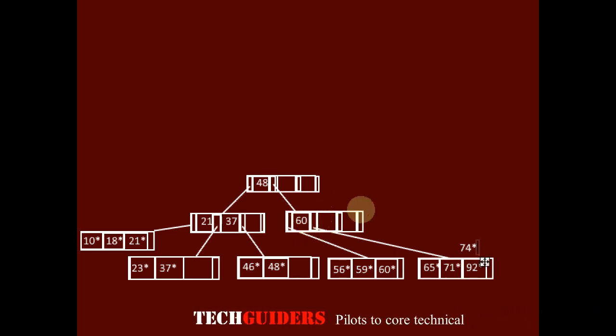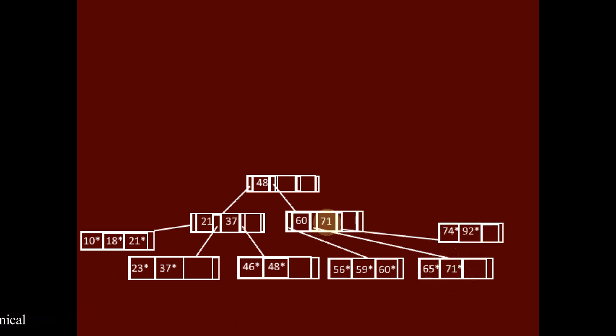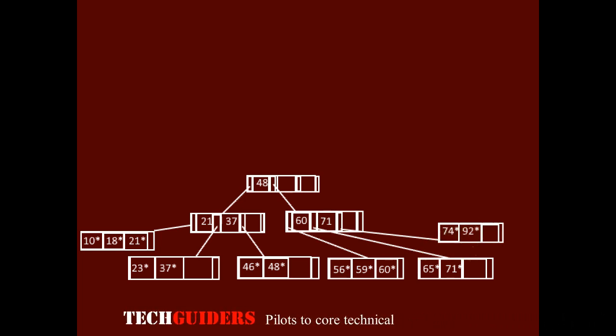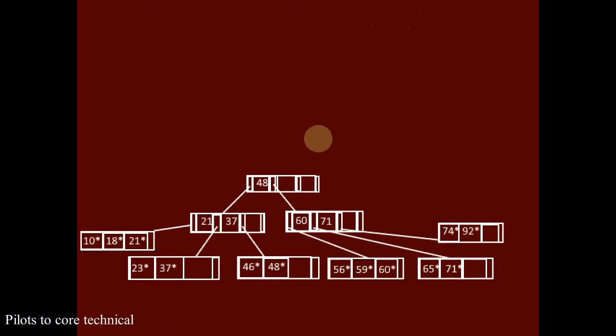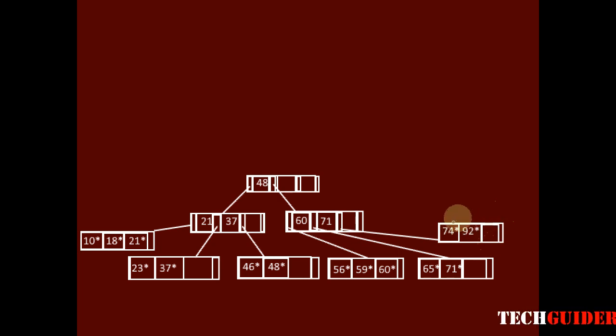71 is promoted as the key to the parent to guide the search, and there is enough space in that non-leaf node so it occupies a place after 60. 71 is chosen as the mid key, with all entries less than or equal to 71 kept to the left and all entries greater than 71 kept to the right. The last key is 78. 78 is greater than 48 and greater than 71, and there is space in that leaf node, so we insert it after 74.